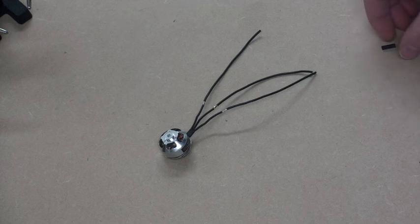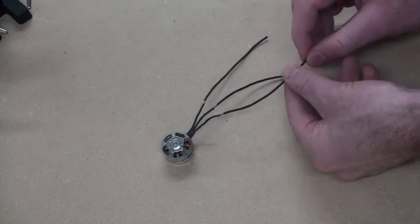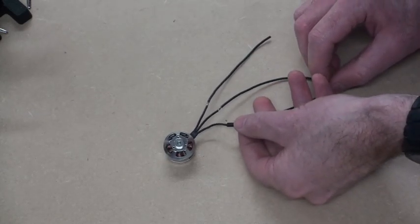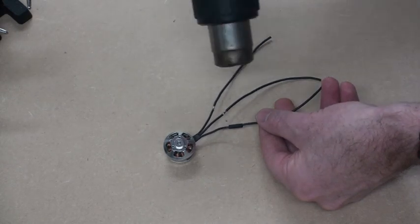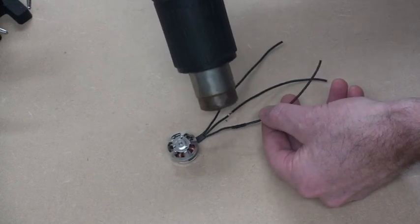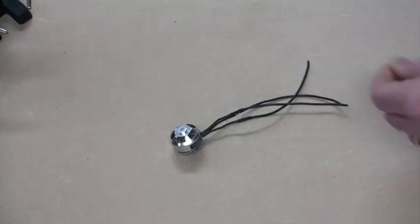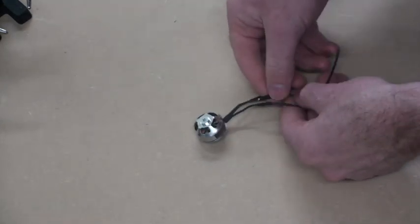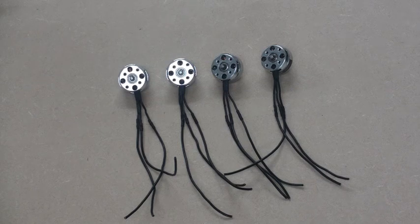I'm just going to put some heat shrink on these joins that I've made for extending the motor wires. So here we are with all four motors now with their wires extended, ready to install into the Mini T4.